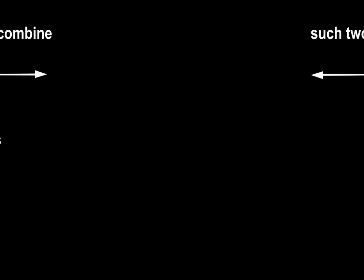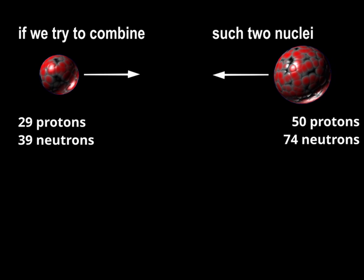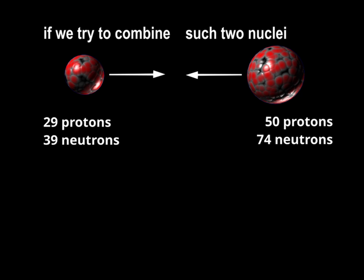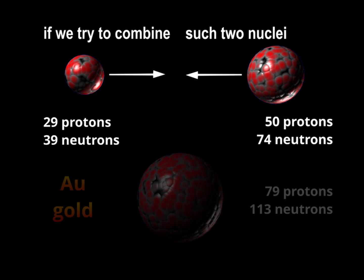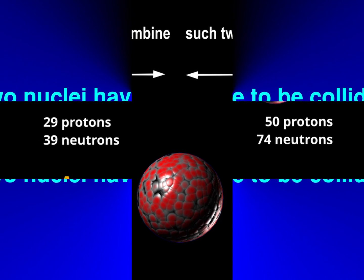Here are other examples of nuclei. What would happen if we tried to combine two such nuclei? As a result, we would obtain a new nucleus consisting of the combined protons and neutrons — a nucleus with 79 protons: a nucleus of gold. So we have learned a method of producing gold from two lighter elements. Unfortunately, such a combination is not easy, because the two nuclei repel one another.